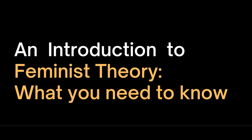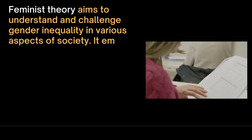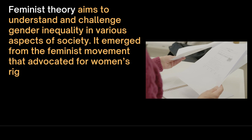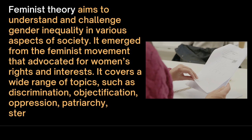Feminist epistemologies include situated knowledge, intersectionality, epistemic injustice and standpoint theory. Feminist theory has a number of strands including liberal feminism, radical feminism, postmodern feminism, intersectional feminism and eco-feminism. Feminist theory aims to understand and challenge gender inequality in various aspects of society. It emerged from the feminist movement that advocated for women's rights and interests. It covers a wide range of topics such as discrimination, objectification, oppression, patriarchy, stereotyping and epistemology.